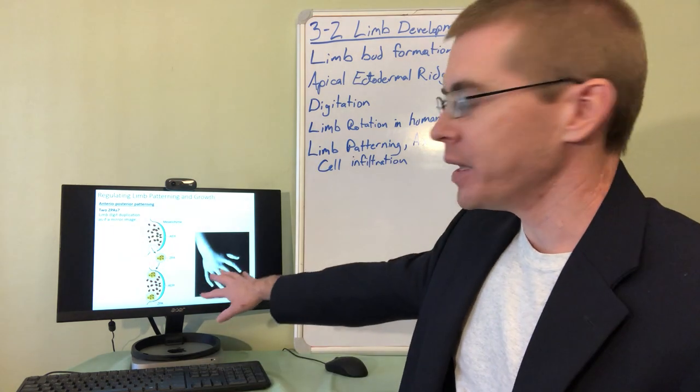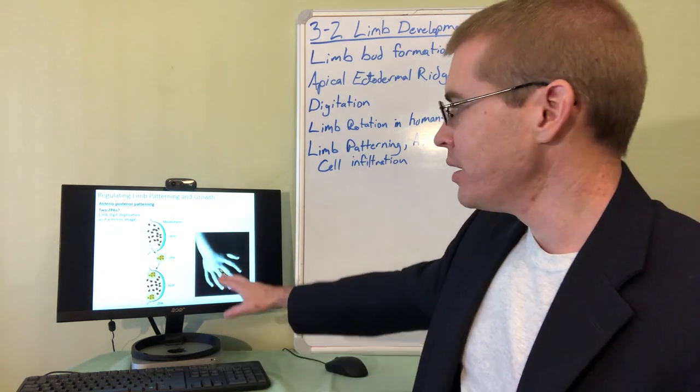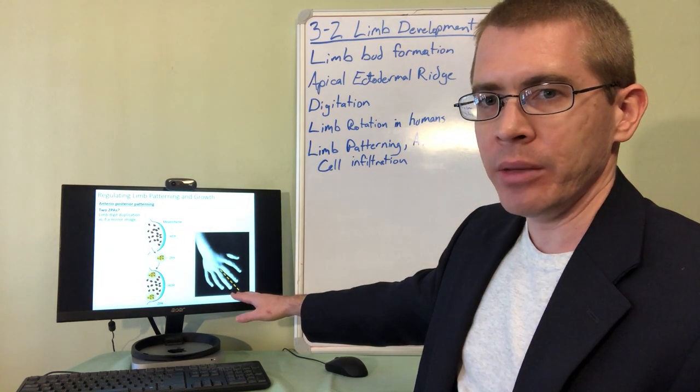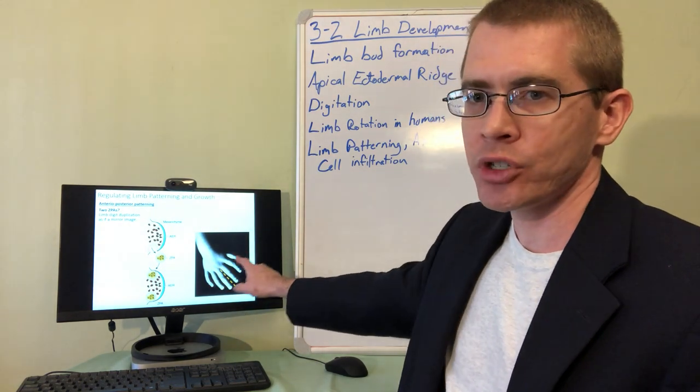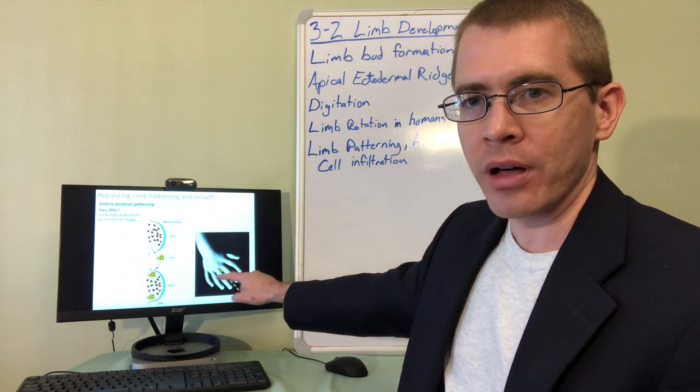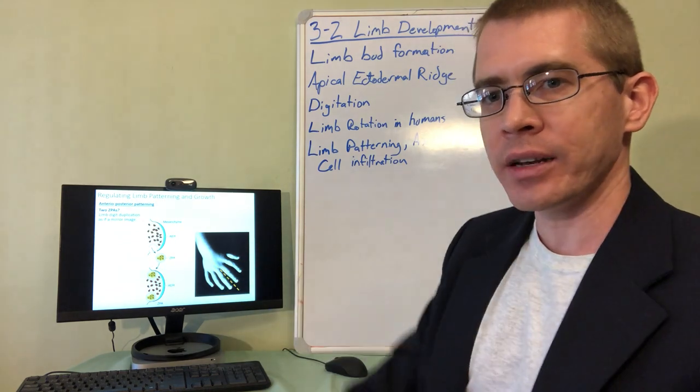So if that process goes awry, then what we end up having is a mirrored image of the limb. So here's an example of that actually happening. This individual has two thumbs, one on either side of their hand.